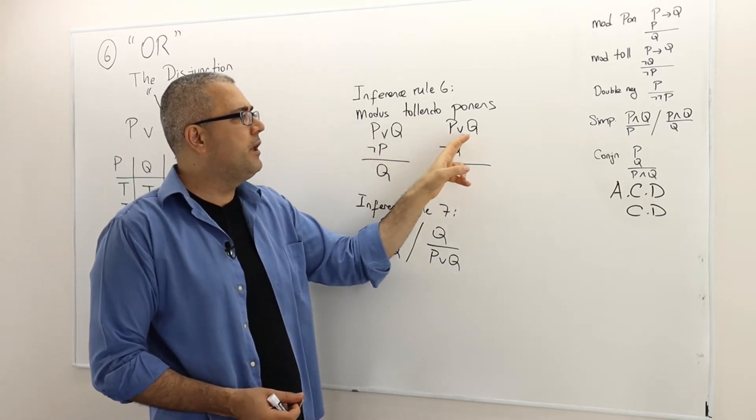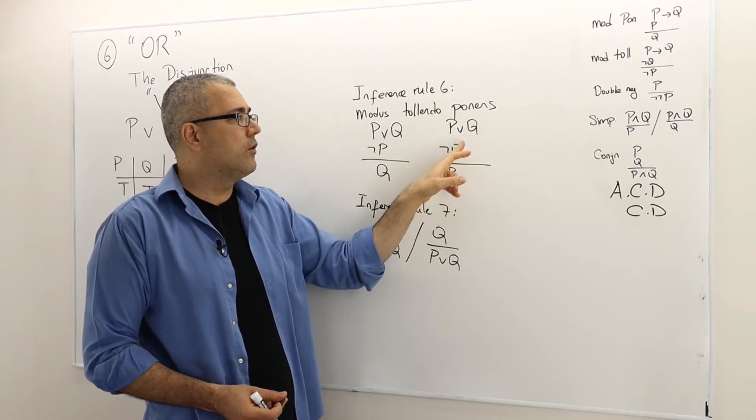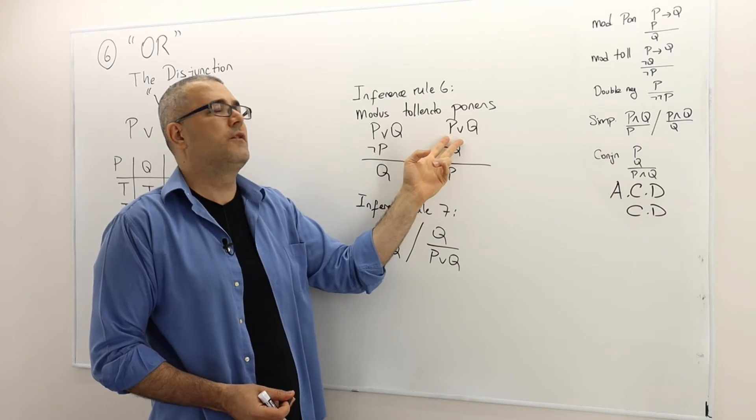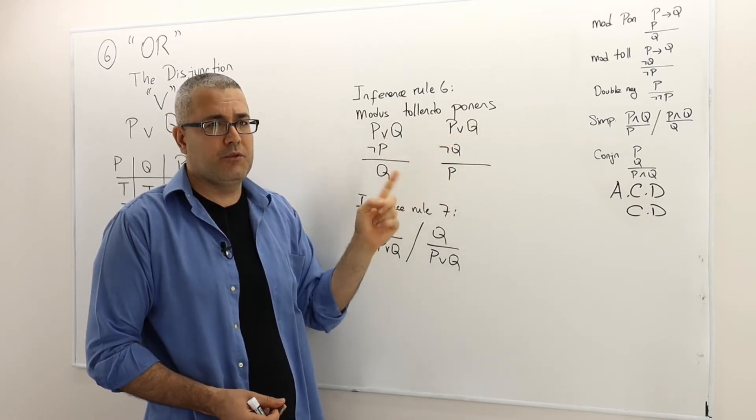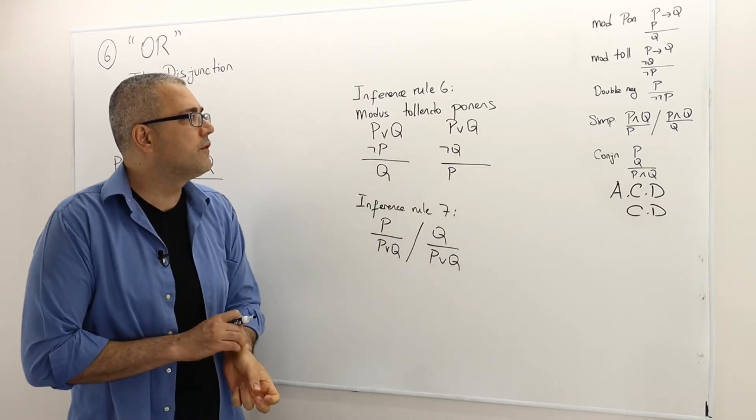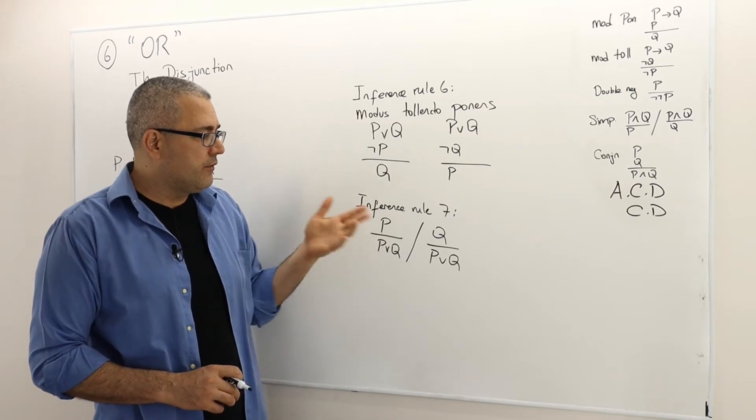If P or Q is true but not Q is true, meaning Q is false, well then that means for this to be true, one of them has to be true, so P must be true. So we call this inference rule modus tollendo ponens.